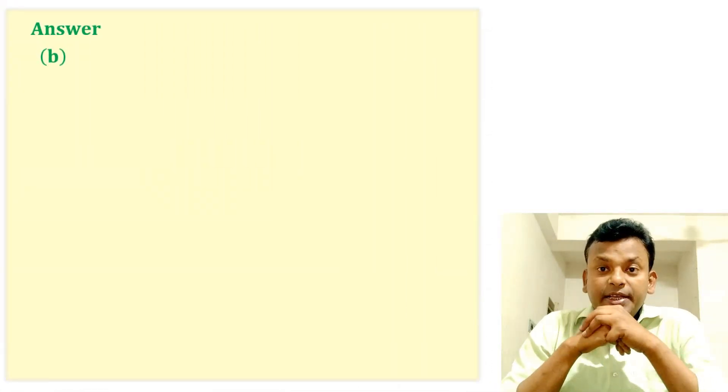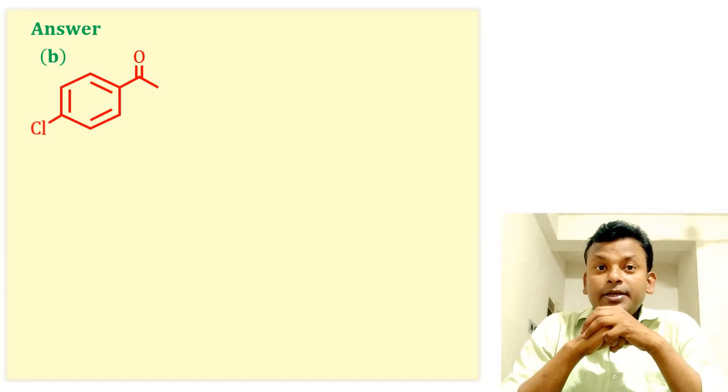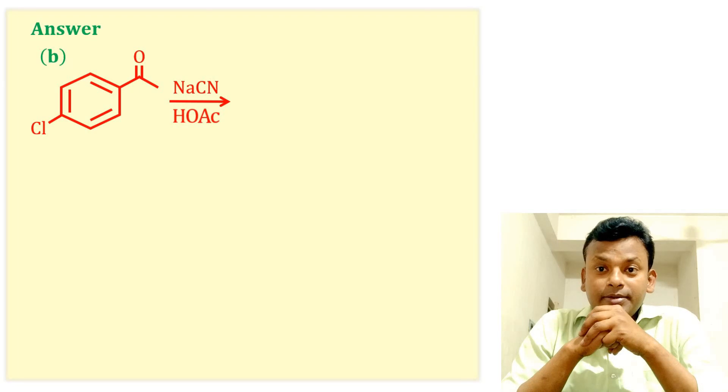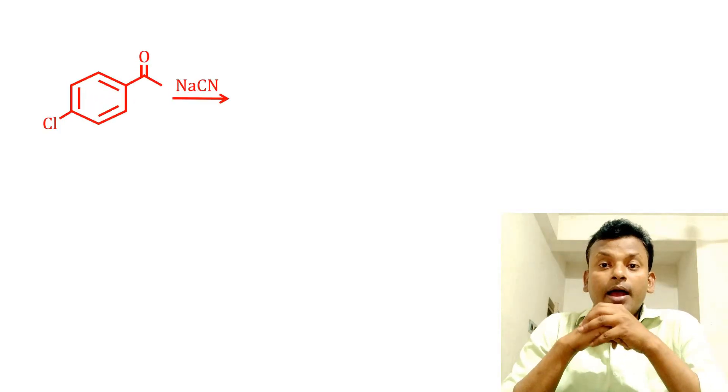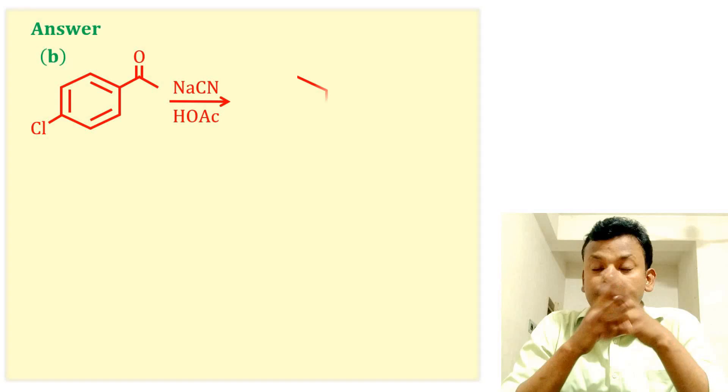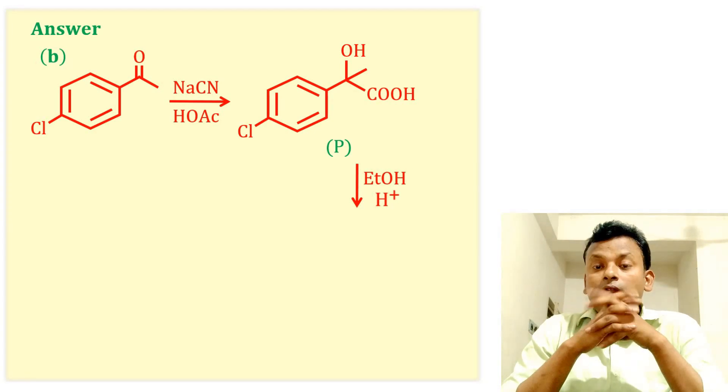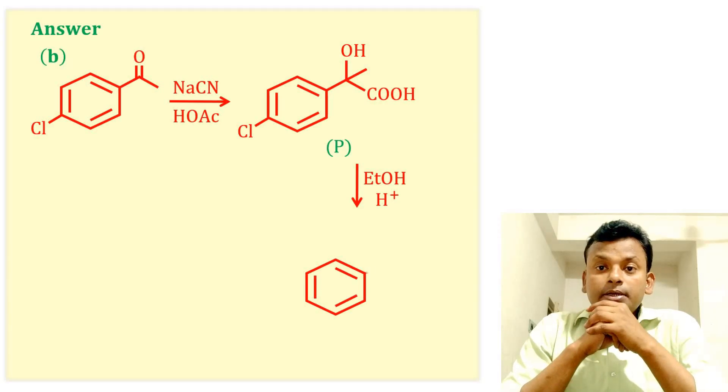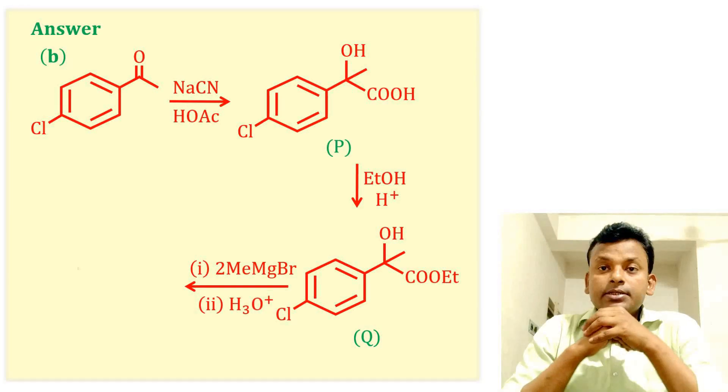Option B is the correct answer. First it reacts with NaCN and acetic acid. Now first see the mechanism. This compound first reacts with NaCN gives cyanohydrin, and hydrolysis of cyanide gives acid. That is the product P, and this product is R.